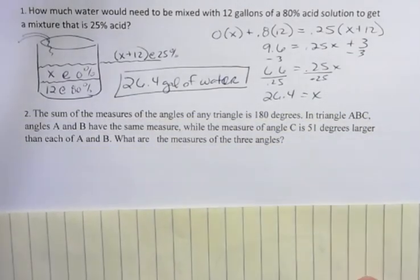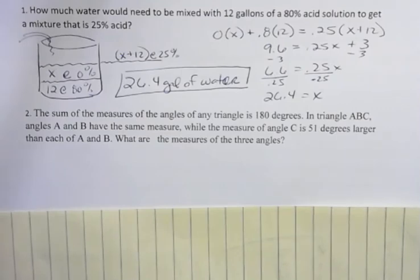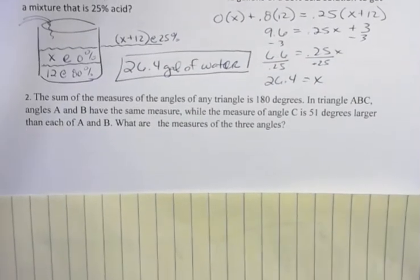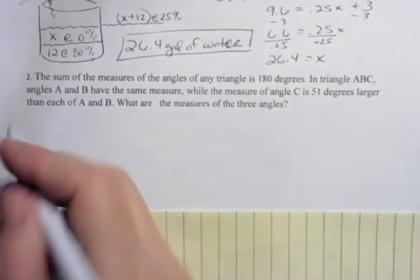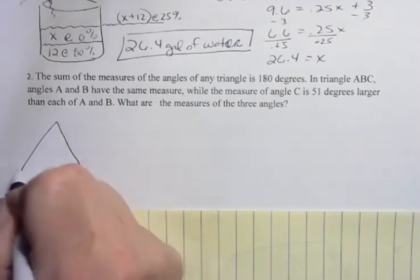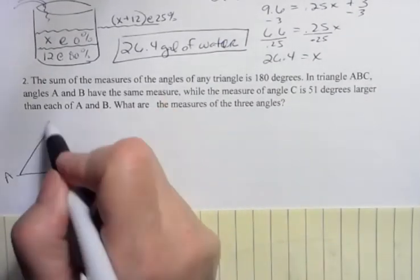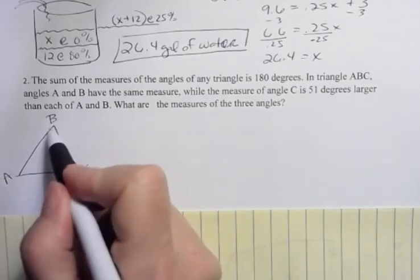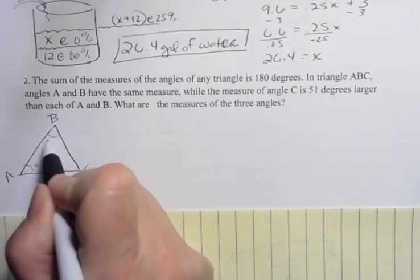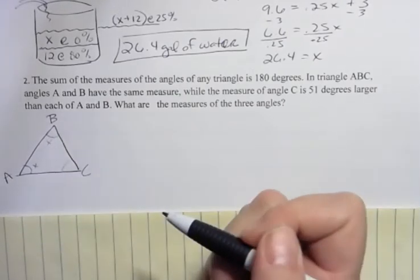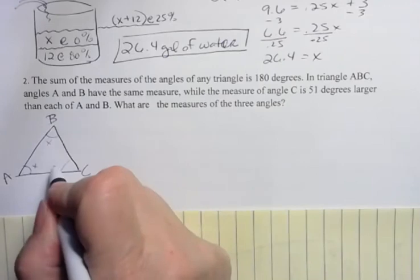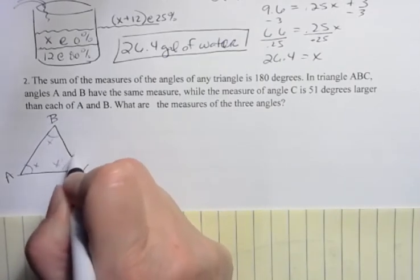Okay, the sum of the measures of angles of any triangle is 180 degrees. In triangle ABC, angles A and B have the same measure, while the measure of angle C is 51 degrees larger than A and B. What are the measures of the three angles? So here's my triangle. I drew, it looks like something that actually doesn't fit this scenario. But if I had a triangle and I have A and B have the same measure, so I'm going to call both of those X. What would I call C? Well, it's 51 degrees larger, so what about X plus 51?